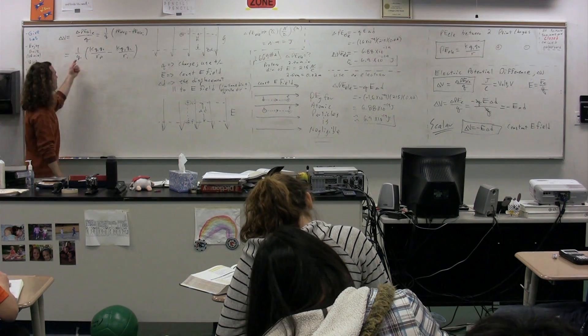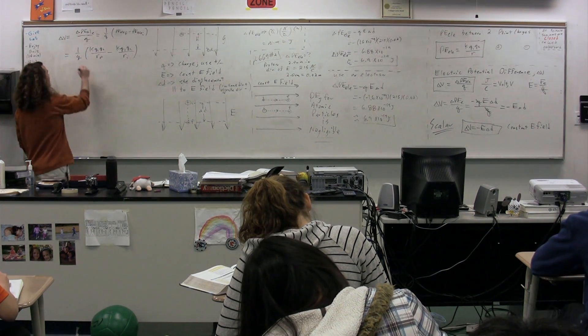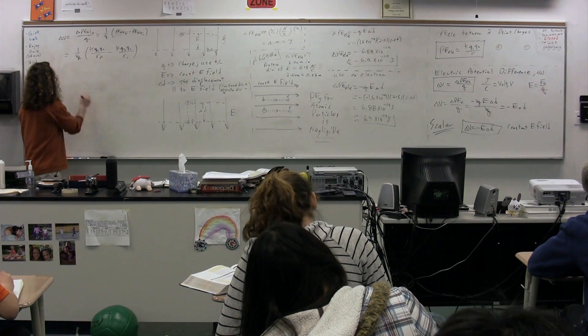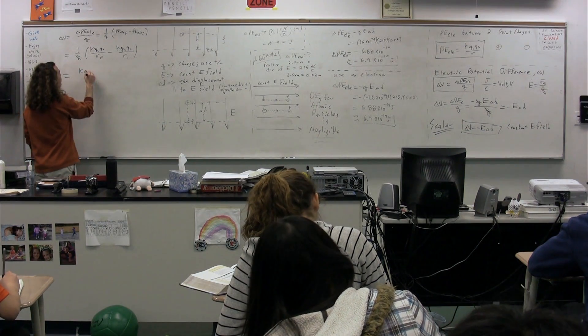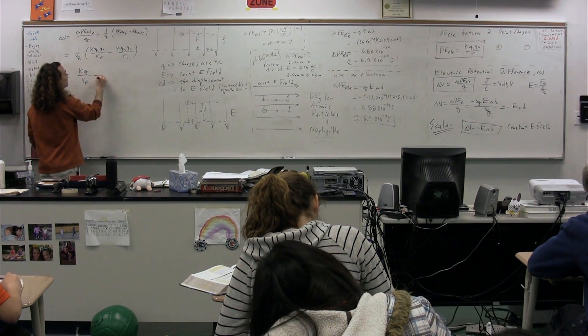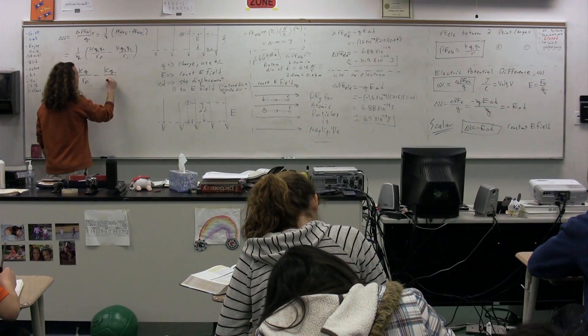Again, we have a charge on the bottom. It doesn't really matter which charge we're talking about on the bottom. I'll just pick one of them, and that's going to cancel out. And we get KQ over R final minus KQ over R initial.